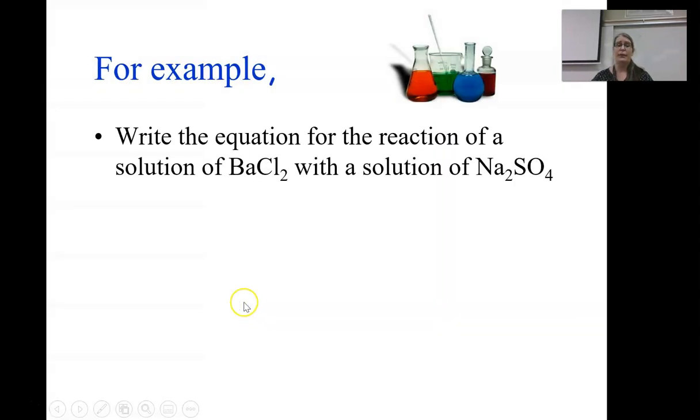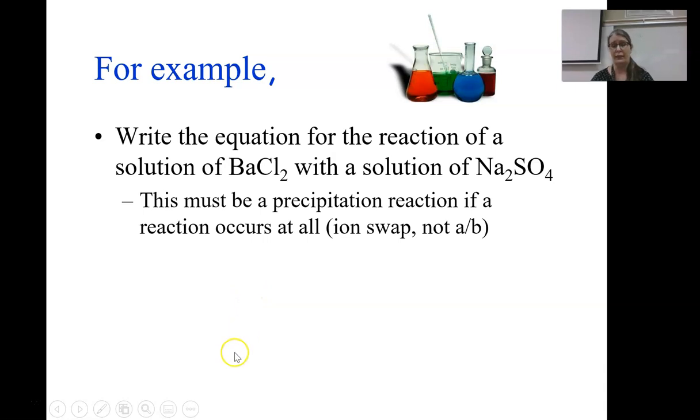For example, I could write this reaction. I have a solution of barium chloride and a solution of sodium sulfate. This has to be a precipitation reaction if we get a reaction at all. It's an ion swap reaction and it's not an acid in base. So we need to think about whether we will actually form a solid product. And here are a few rules that are important to remember to help us figure that out.